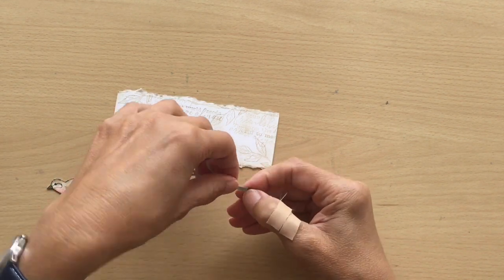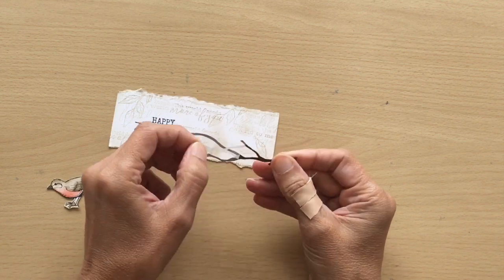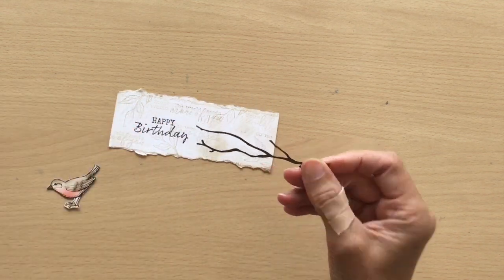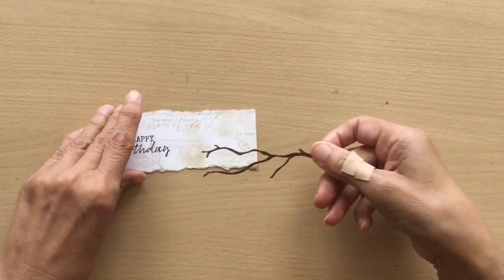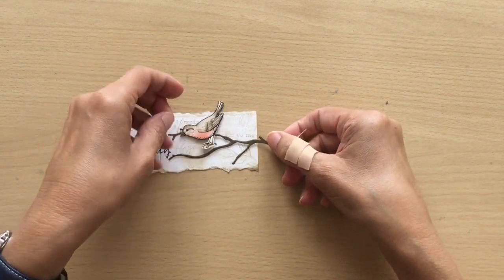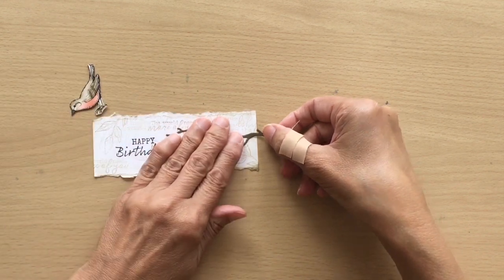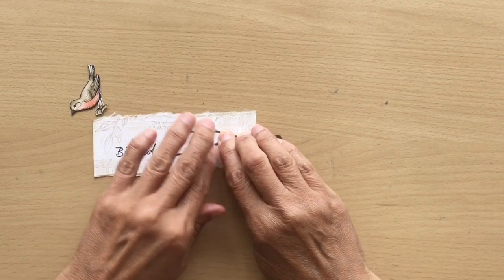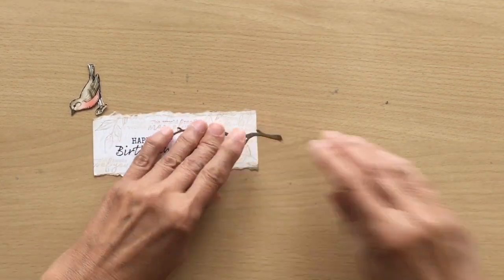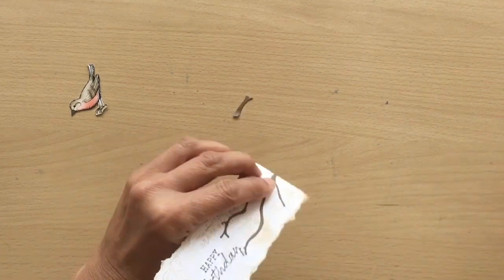And then I've got this on the back here, so this is like a sticky adhesive, makes it much easier to stick things on. And then I'm going to decide where I want my branch, where my bird's going to go. And then just push that down and then just cut off what we don't need at the end there.